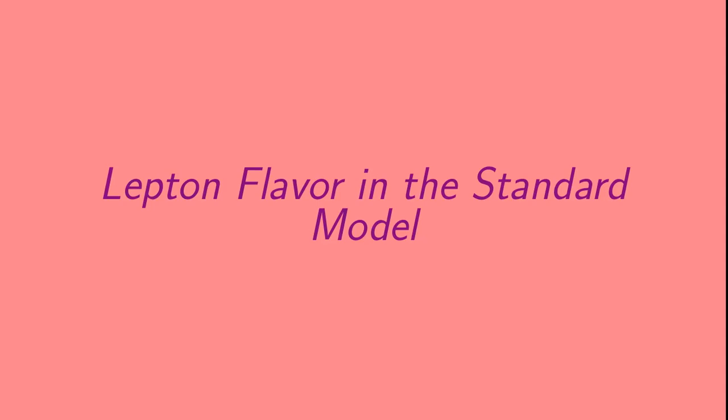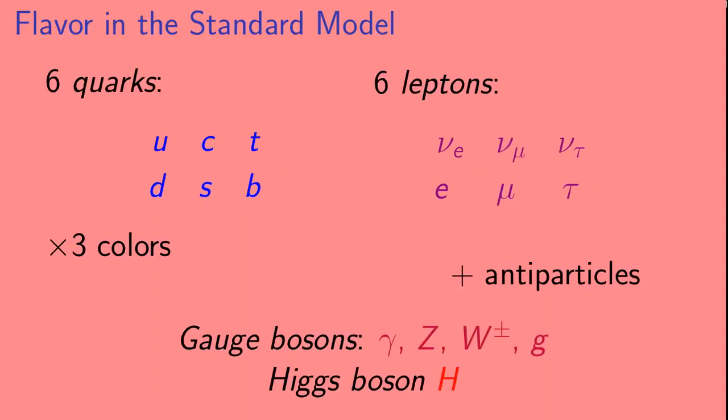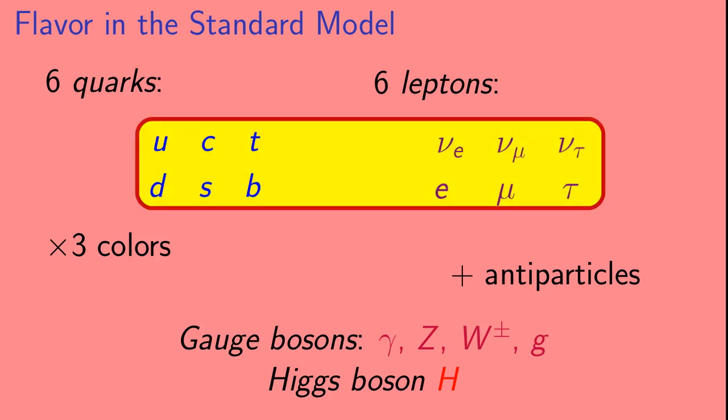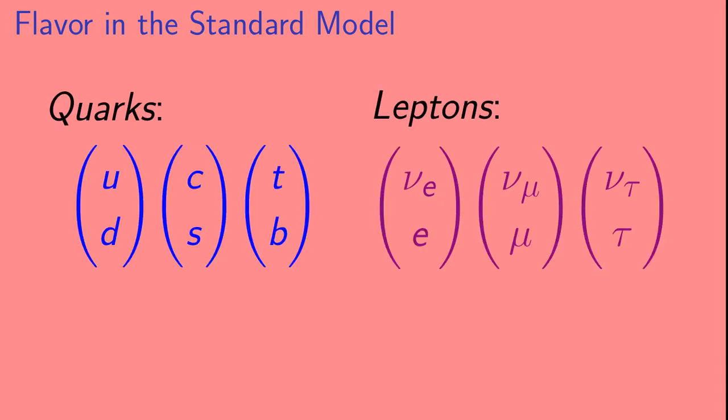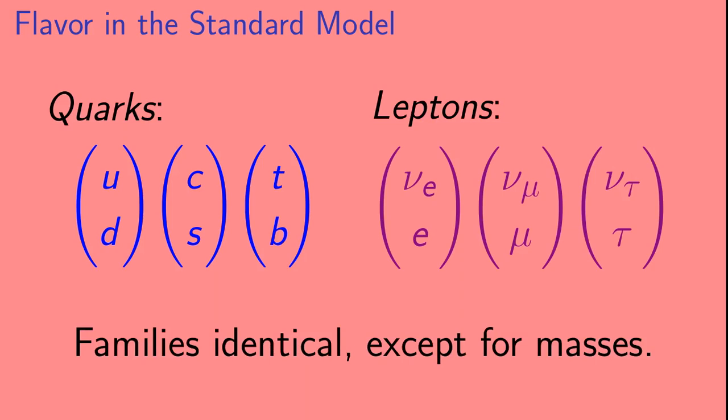Let's very briefly talk about lepton flavor in the standard model. So in the standard model of particle physics, we have six quarks and six leptons. And these quarks and leptons interact with the gauge bosons of the standard model: the photon, the Z, the W plus and minus, and the gluons. And also, there's the Higgs boson. The quarks and leptons are arranged into three families. And these families are identical except for mass terms of the quarks and leptons.